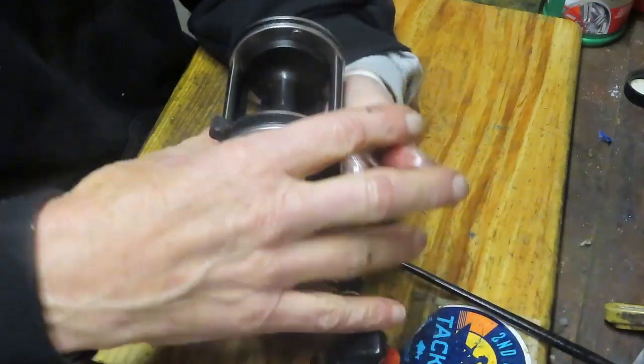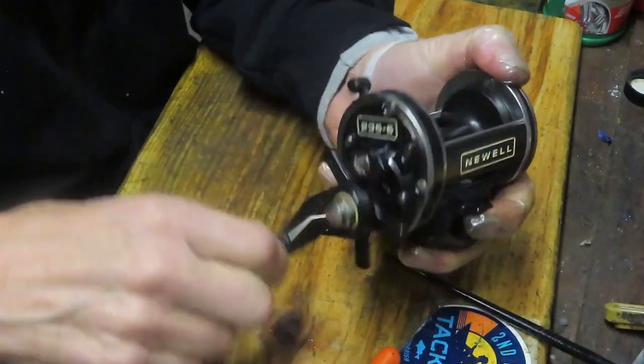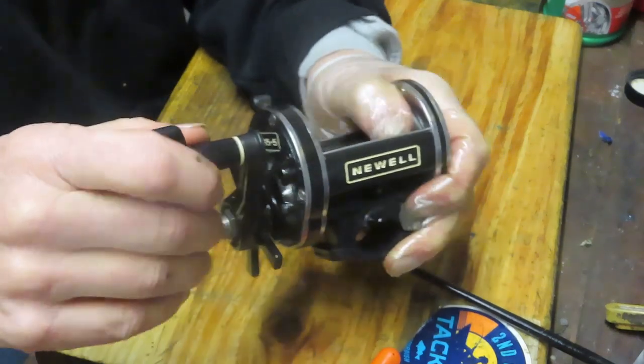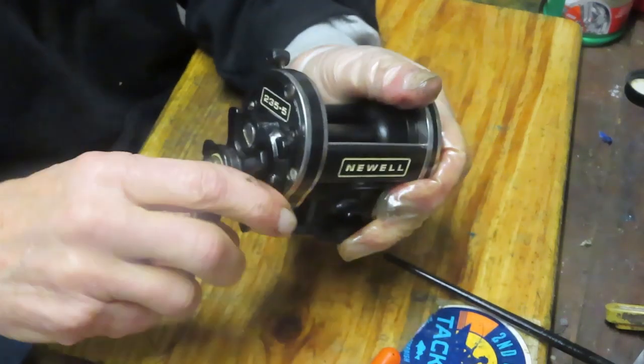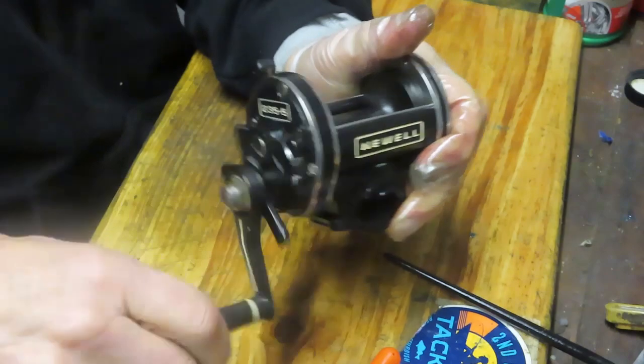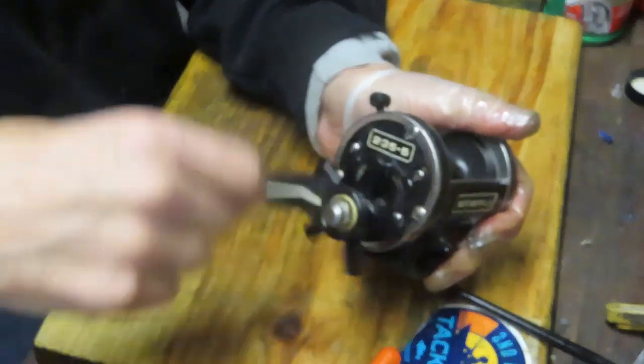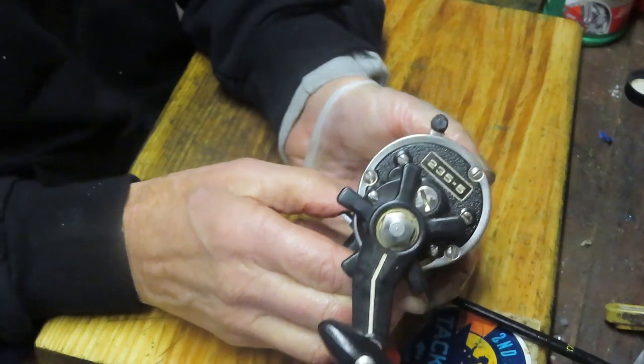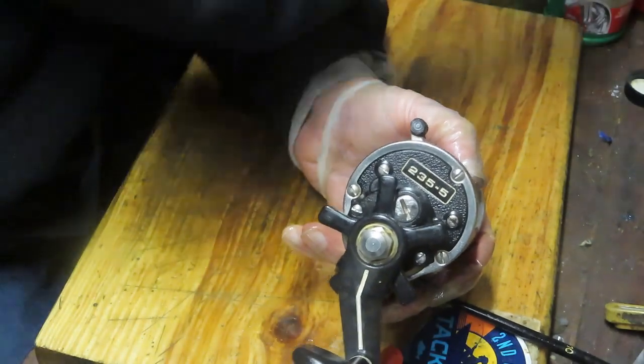There you go. There's your ceramic bearings. Let's go ahead and crank the reel now. Operating beautifully. Make sure that your drag washers are nice and tight. There you are. And that's it. That's your service of the Newell 235-5 Saltwater Fishing Reel.